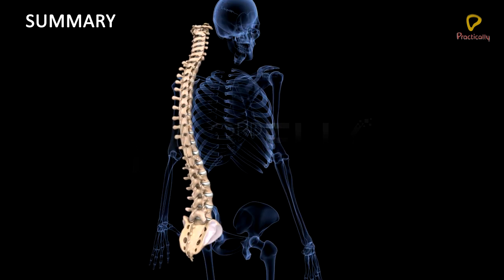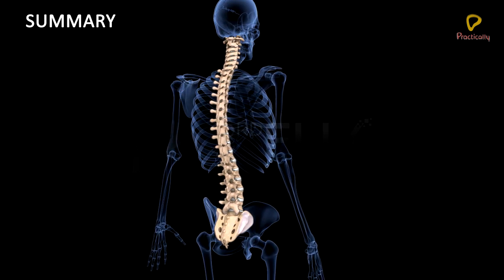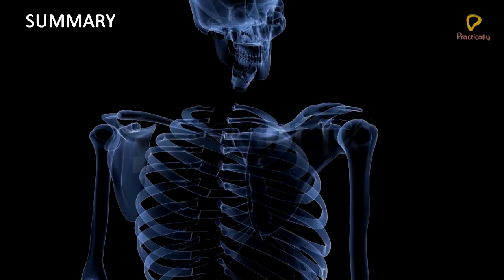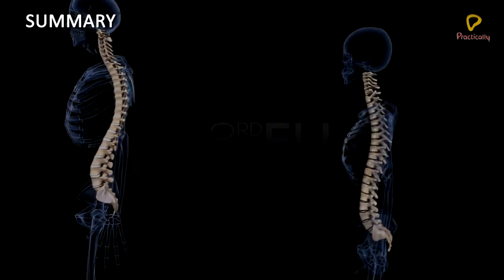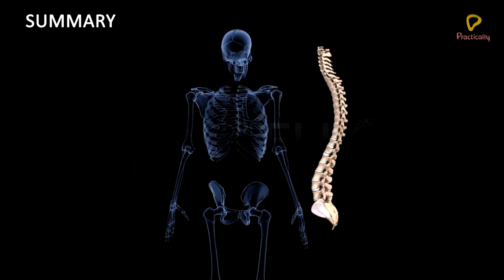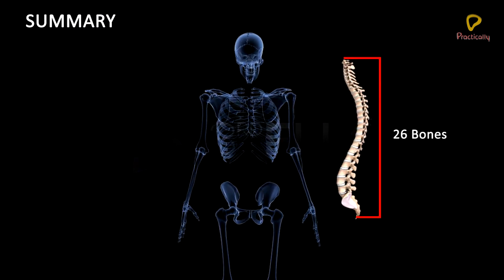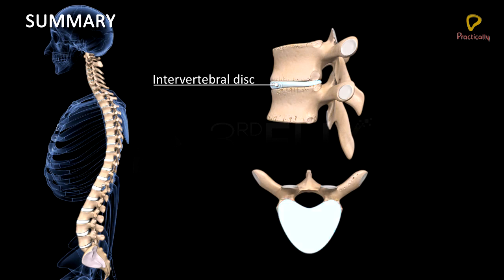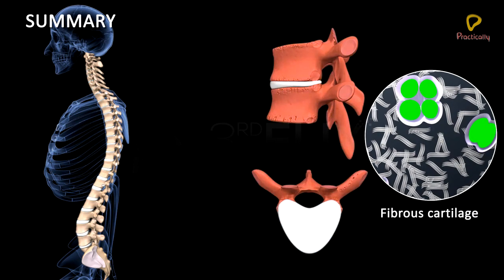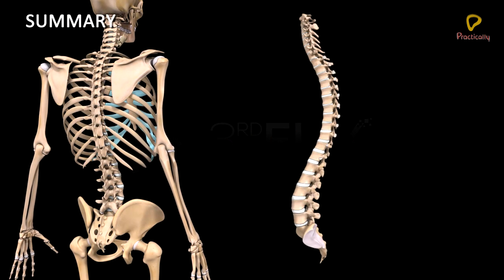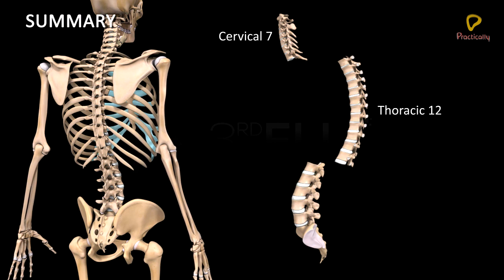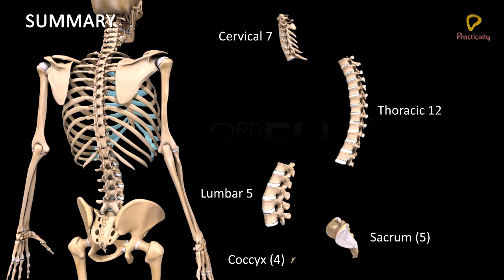In summary, the vertebral column or backbone lies along the mid-dorsal region of the neck and trunk, extending from the base of the skull. In a human adult, it is made up of 26 serially arranged bones called vertebrae. The intervertebral discs, made up of fibrous cartilage, are present between successive vertebrae forming cartilaginous joints. Vertebrae are of five types: cervical, thoracic, lumbar, sacral, and coccygeal.